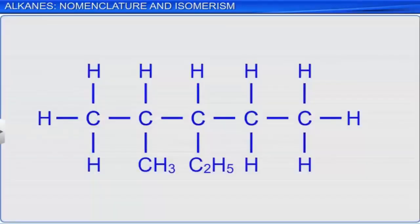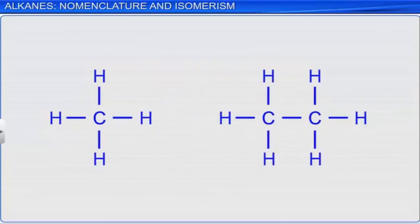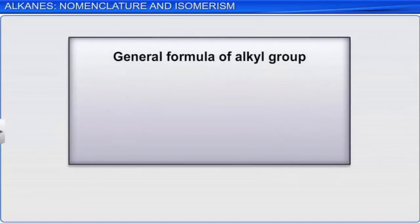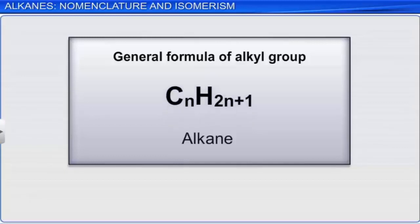We come across many groups like CH₃, C₂H₅, attached to carbon atoms. These groups are derived by removing one hydrogen atom from alkanes and are known as alkyl groups. Their general formula is CₙH₂ₙ₊₁. The name of the alkyl group is derived from the name of the parent alkane by replacing the suffix 'ane' of alkane with 'yl'.